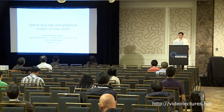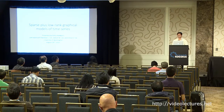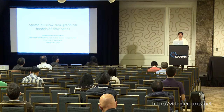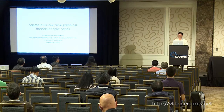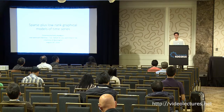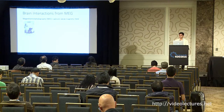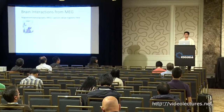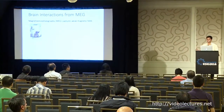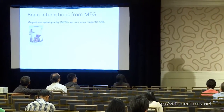Good afternoon everyone. My name is Rahul Nadkarni from the University of Washington, and I'm going to be talking about our work in sparse plus low-rank graphical models of time series. This is joint work with Nick Fody, advised by Casey Lee and Emily Fox. I want to start by talking about our motivating application, which is inferring a network of interactions between brain regions from MEG data.